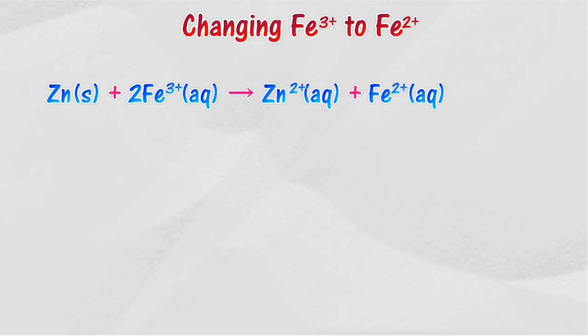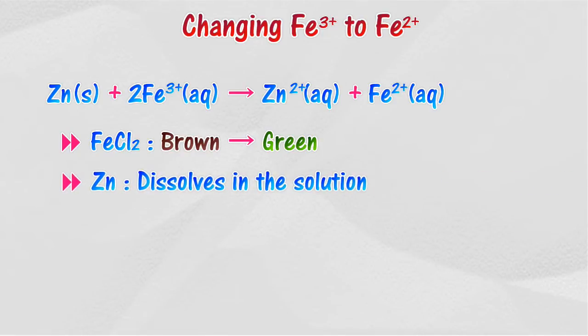This is the ionic equation for the reaction. A brown ferrum 3 chloride solution changes to green. Zinc powder dissolves in the solution.